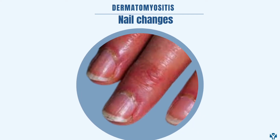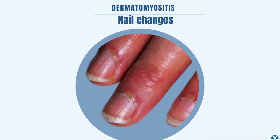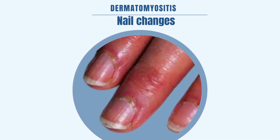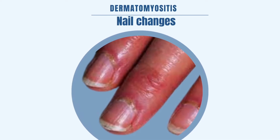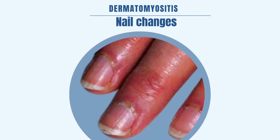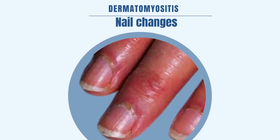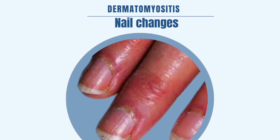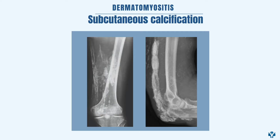Nail changes: There are some rashes around the nails that we call periungual erythema, sometimes accompanied by cuticular overgrowth. If we look with a magnifier and add a drop of immersion oil, we can see a lot of dilated capillaries.